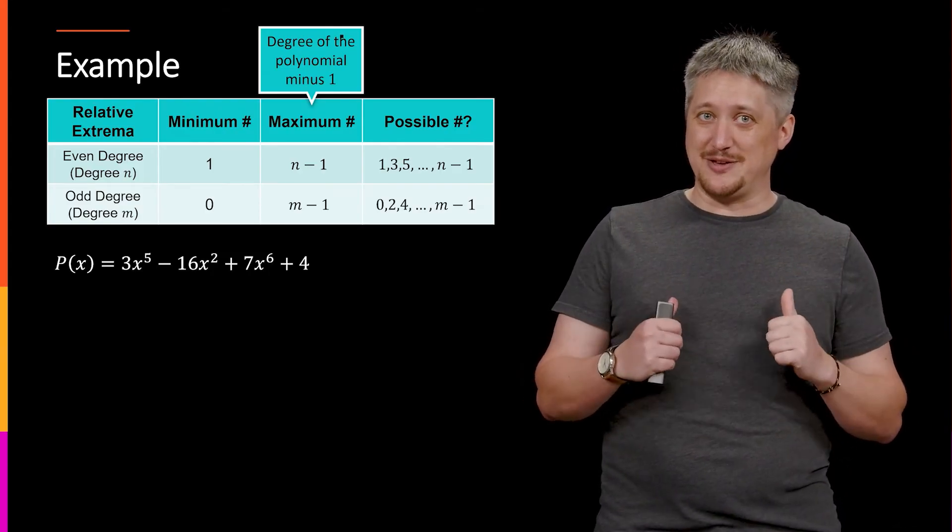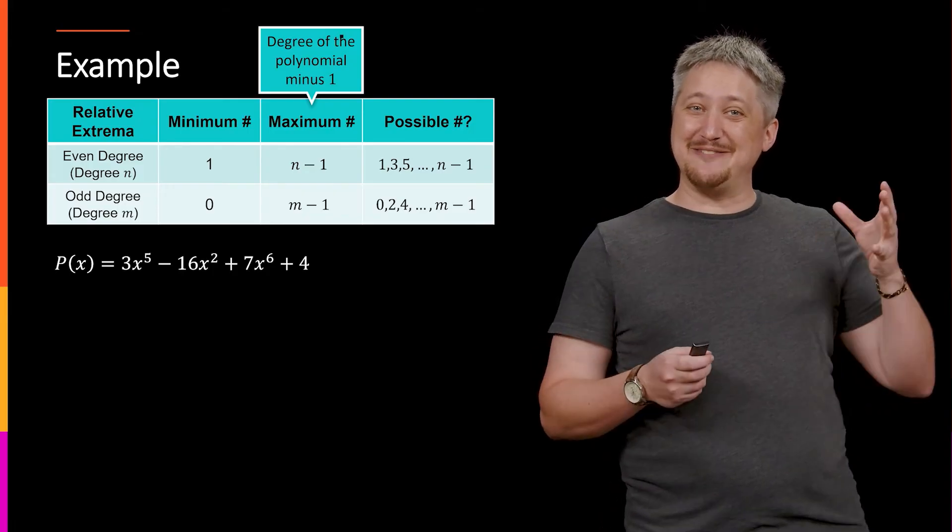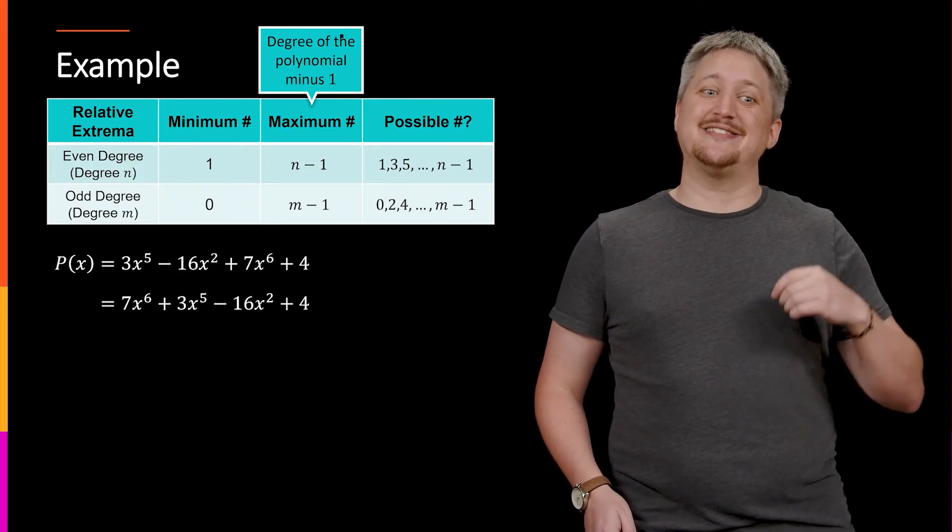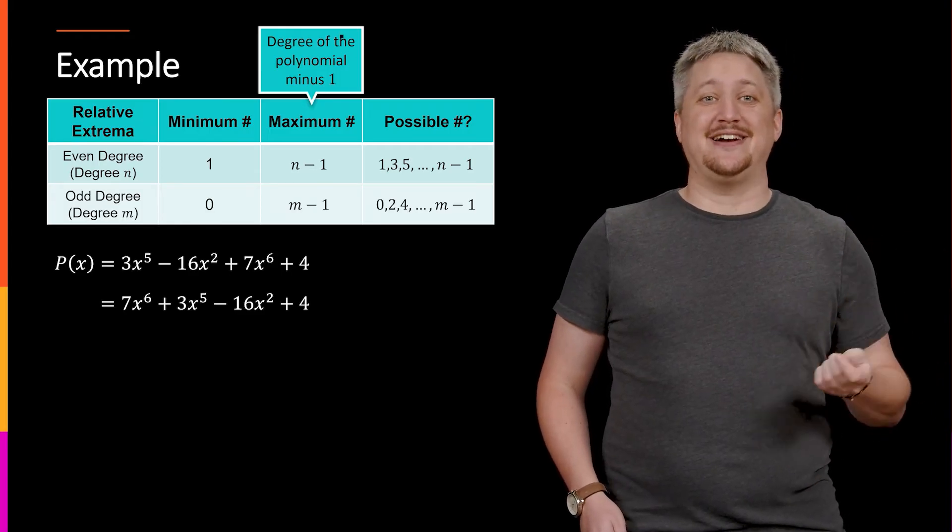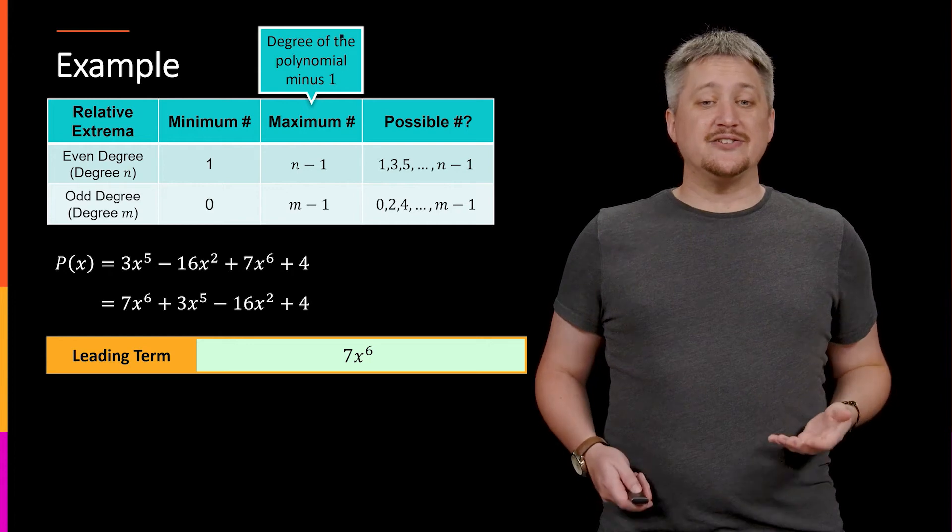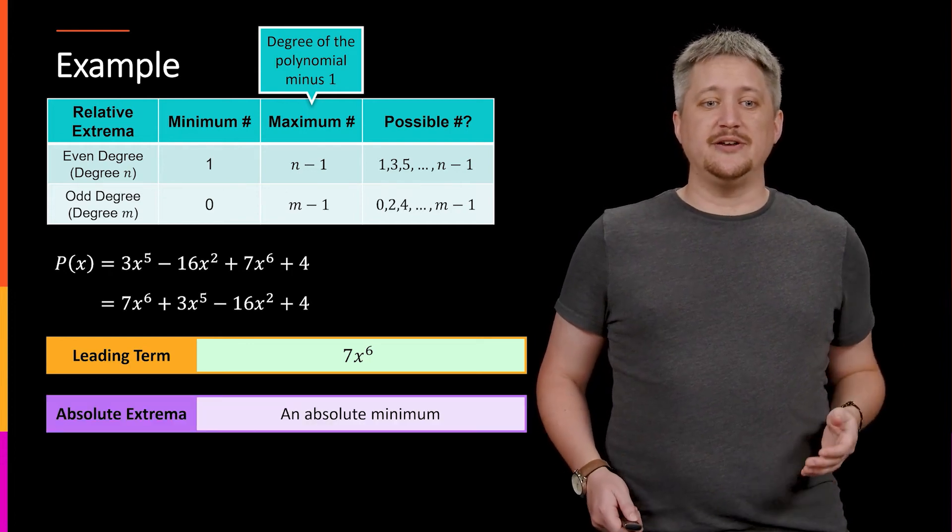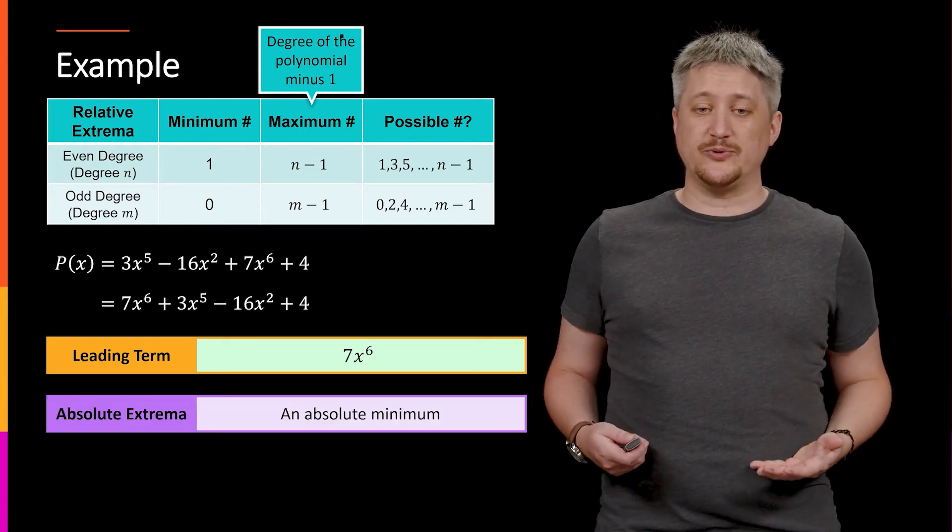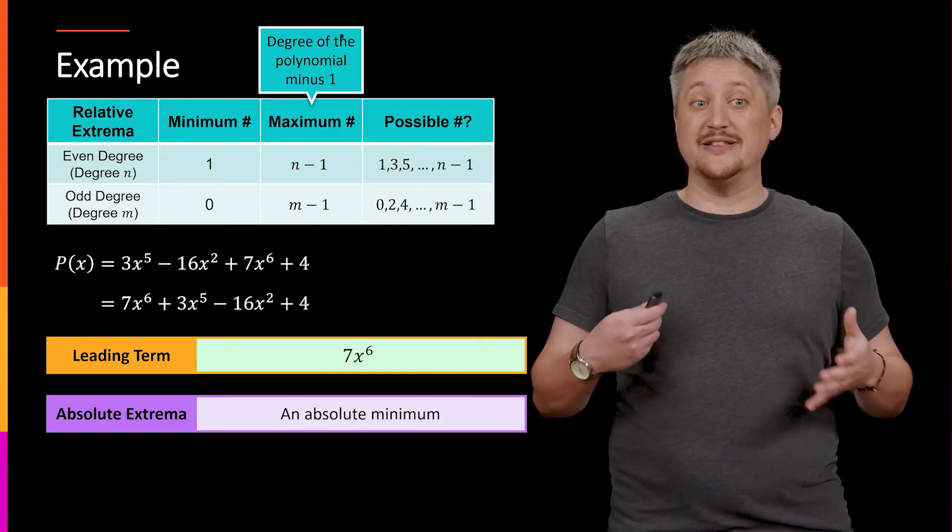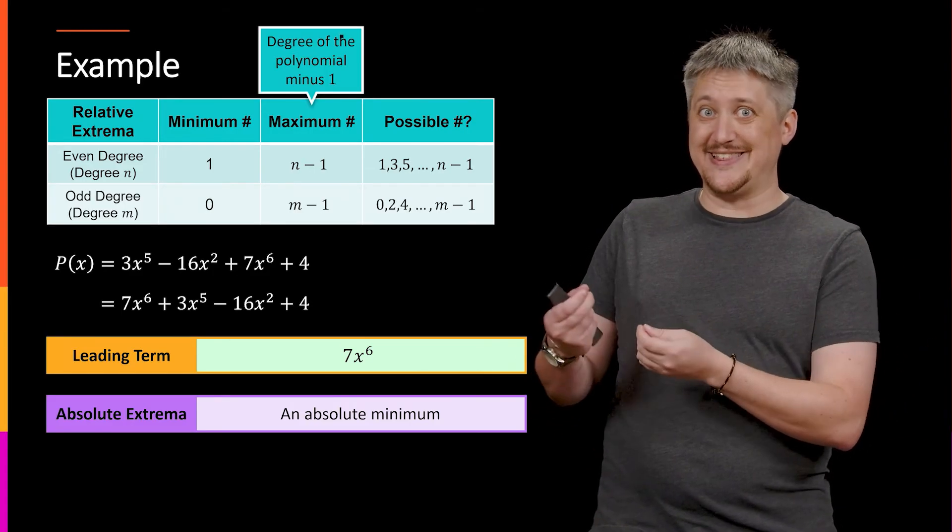Especially me, because I'm evil. So remember, you want to write it from the highest degree down. So I actually want that 7x to the sixth in front. That's the actual leading term, 7x to the sixth. But since that's the leading term, this tells me it's even. So that tells me it has an absolute extrema, which tells me it has to have at least one relative extrema, because it is that absolute extrema.